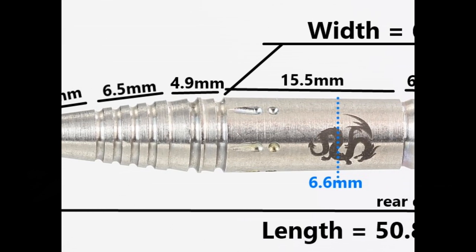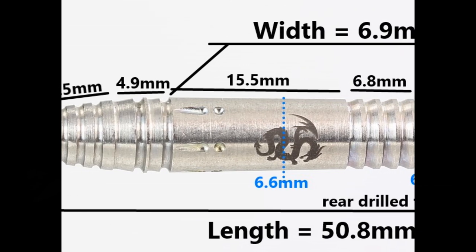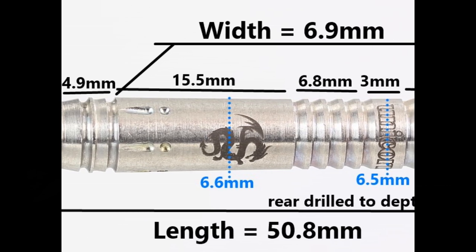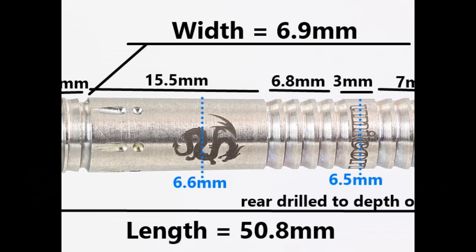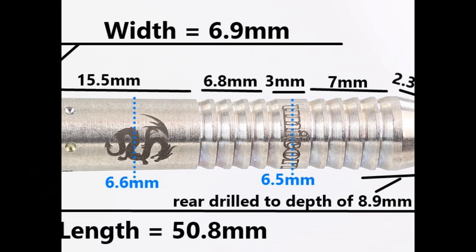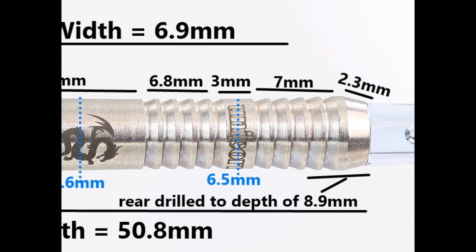As you get onto the rear you've got this kind of shark style grip with the flat edges, that's 6.8 millimeters, and then a ring of 3 millimeters. Then you've got another section of shark grip of 7 millimeters and then a smooth section at the end of 2.3 millimeters. The length is 50.8 millimeters and the width is 6.9 millimeters.